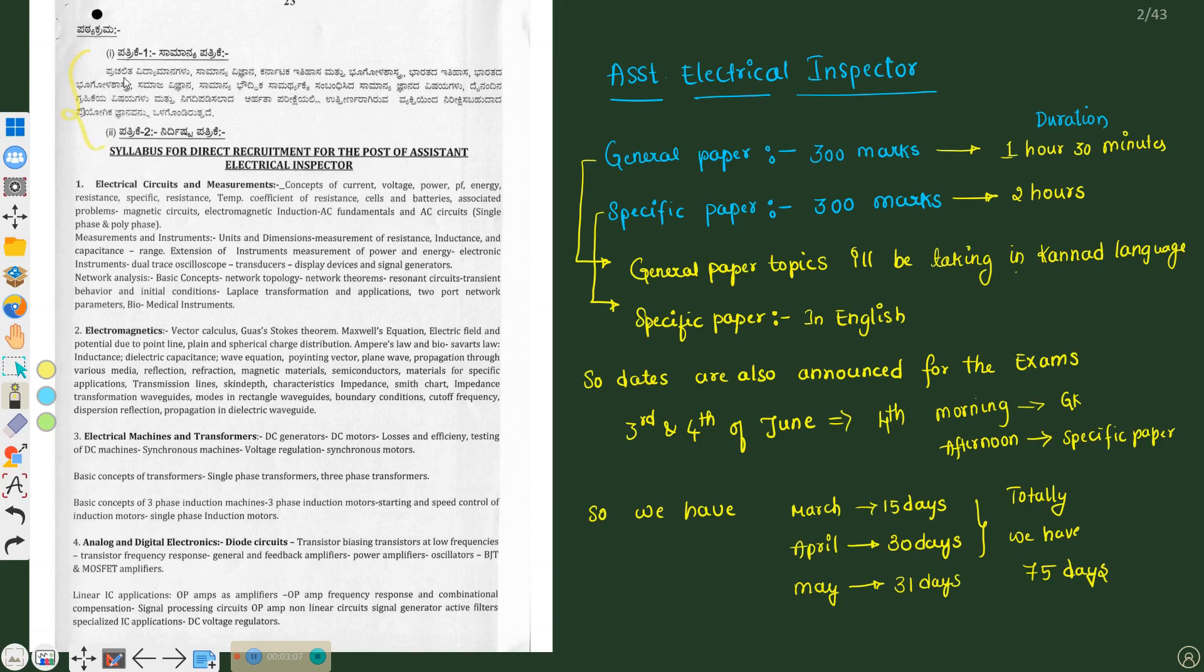If we talk about the general paper 1, we are seeing Prachalitha Vidyamanagalu, Samanye Vignana, Karnataka Itihasa, Bhagola Shastra, Bhartada Itihasa, Bhartada Bhagola Shastra, Samajvignana, Samanye Baudhika, Samanthika, Gnana Vishayagalu, Dainandina Grahikeya Vishayagalu, and other topics which will help test the intellectual ability of the candidate.